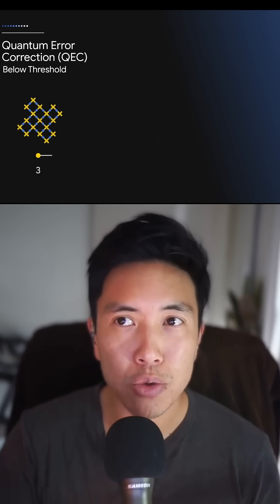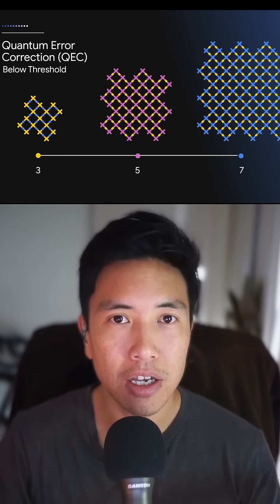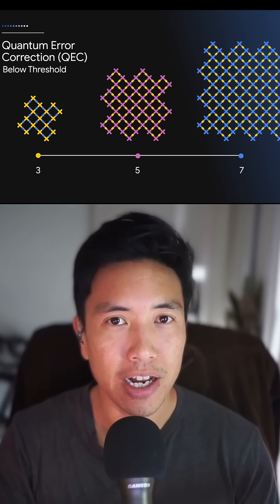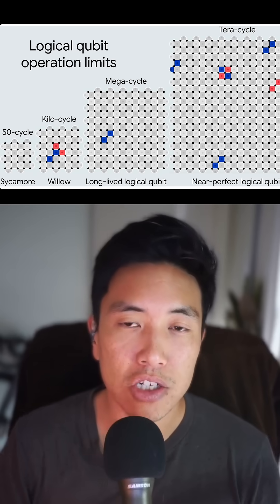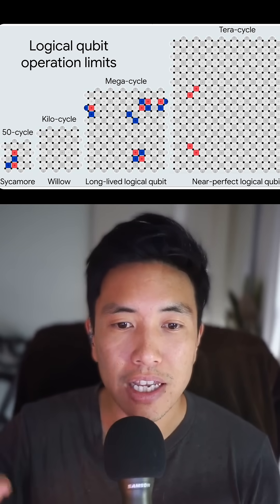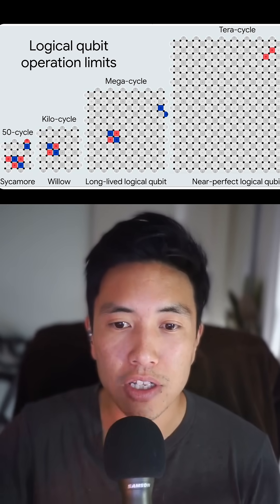But in quantum computers, as you increase the number of qubits, it actually gets better in error checking. So let's explain by using this diagram. You can actually see the grids increase in size over time, and you can see